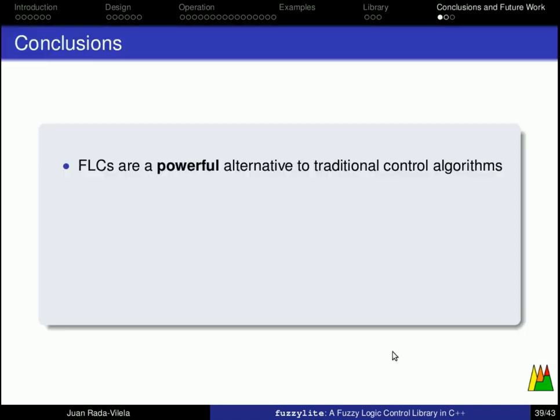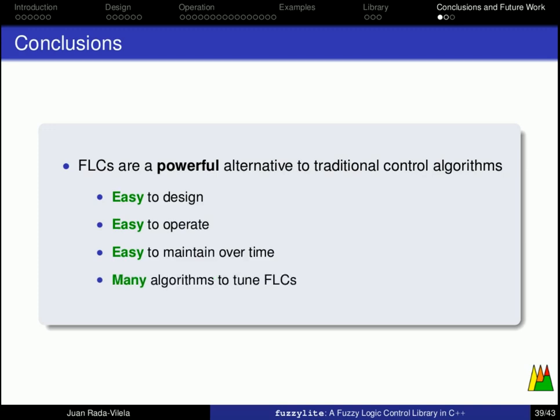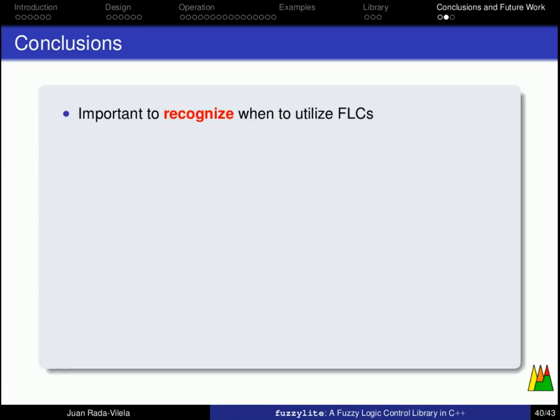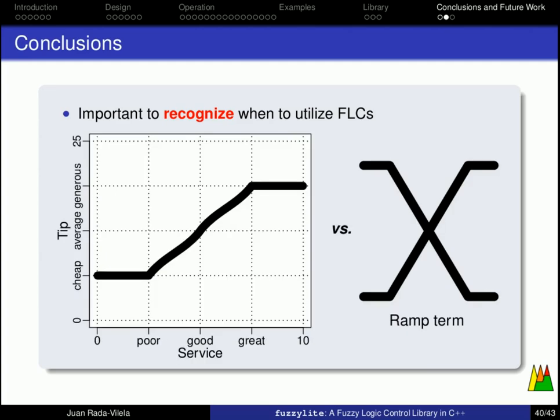Now, as conclusions and future work, well, we have shown that fuzzy logic controllers are a very powerful alternative to traditional control algorithms. They are very easy to design and operate, and also to maintain over time. And there are several algorithms to tune fuzzy logic controllers to improve their performance. However, it is important, very important to recognize when it is useful to utilize fuzzy logic controllers. Because if you take a look at the example that we have shown so far, you can easily model this behavior using a simple function from the ramp term. Now, this function will be far more computationally cheaper than using a fuzzy logic controller.